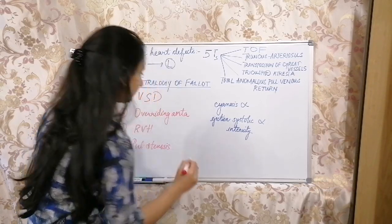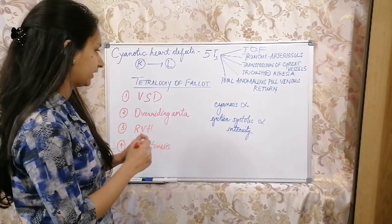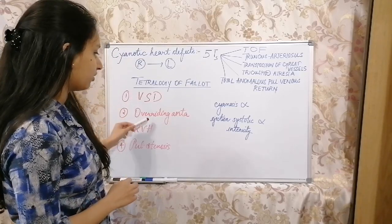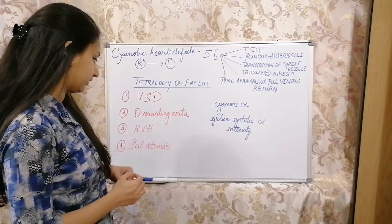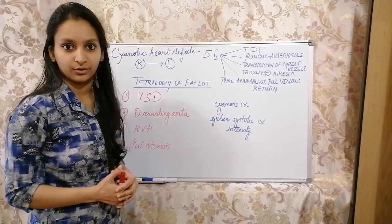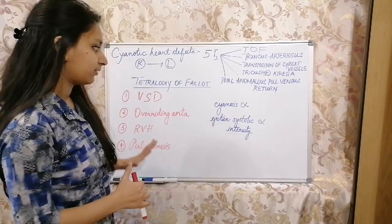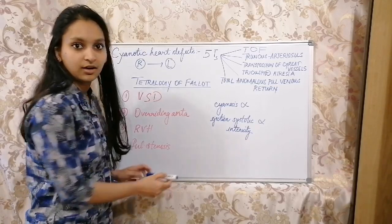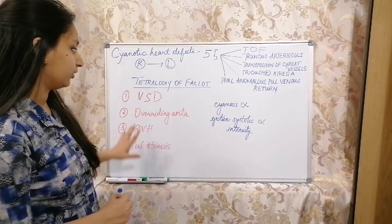These are the four main constituents: Tetralogy of Fallot comprises of VSD, overriding aorta, right ventricular hypertrophy, and pulmonary stenosis. This itself gives us an idea that obviously this is going to be a very potentially fatal situation because all these four things are there together.